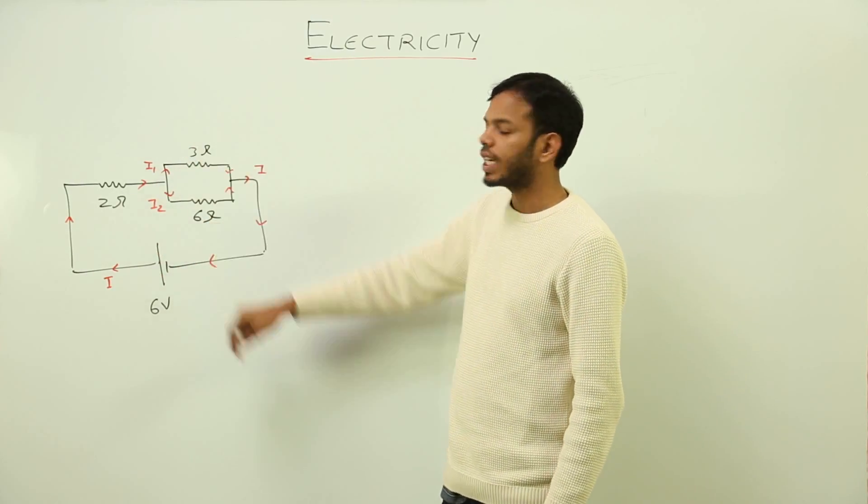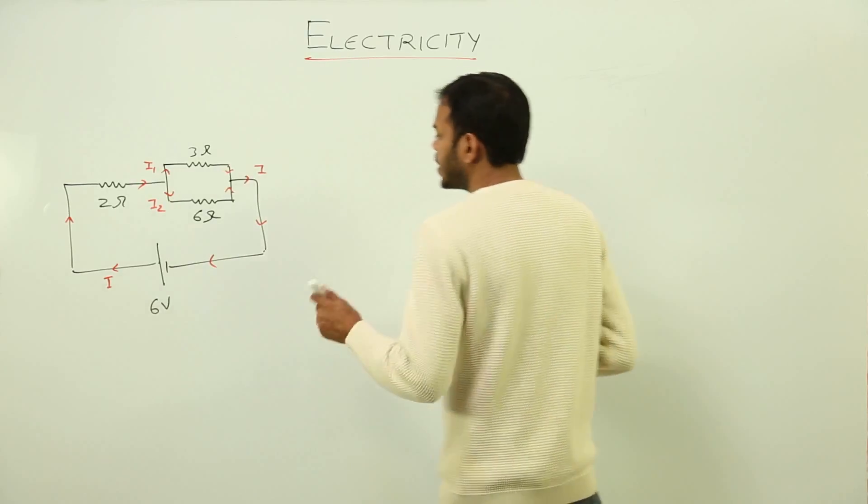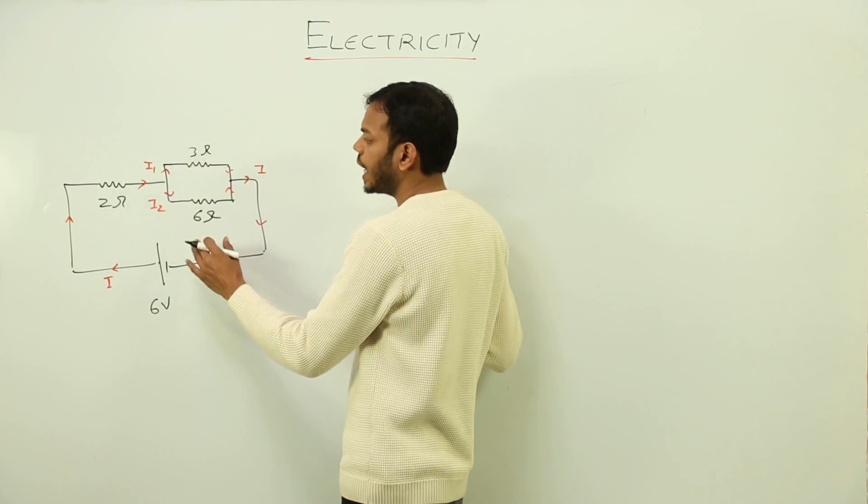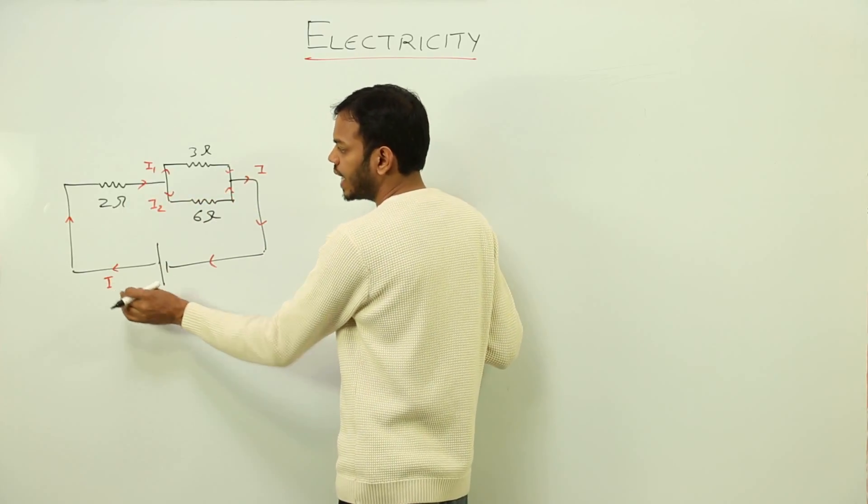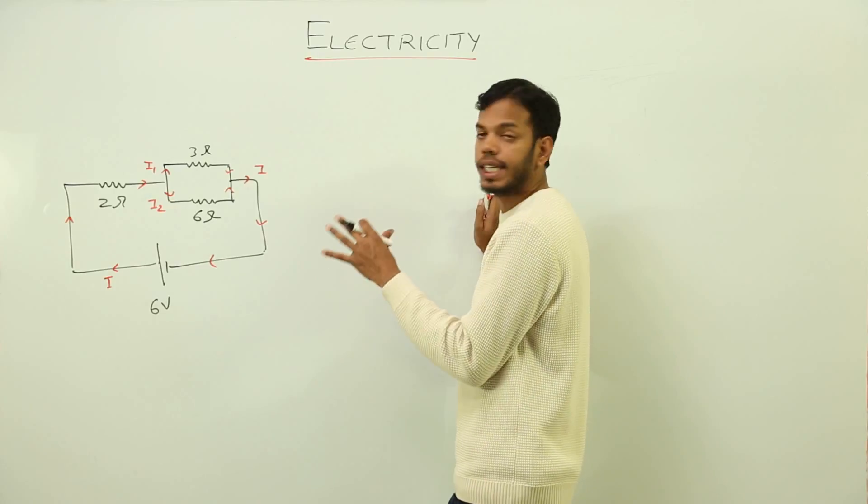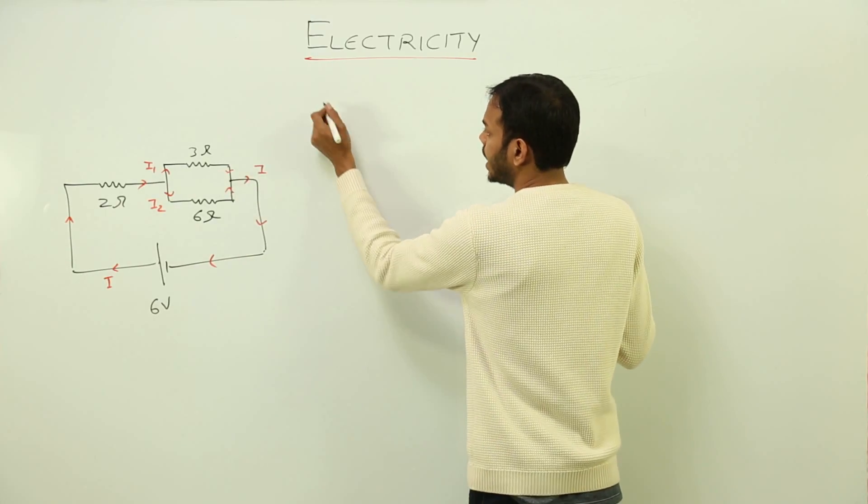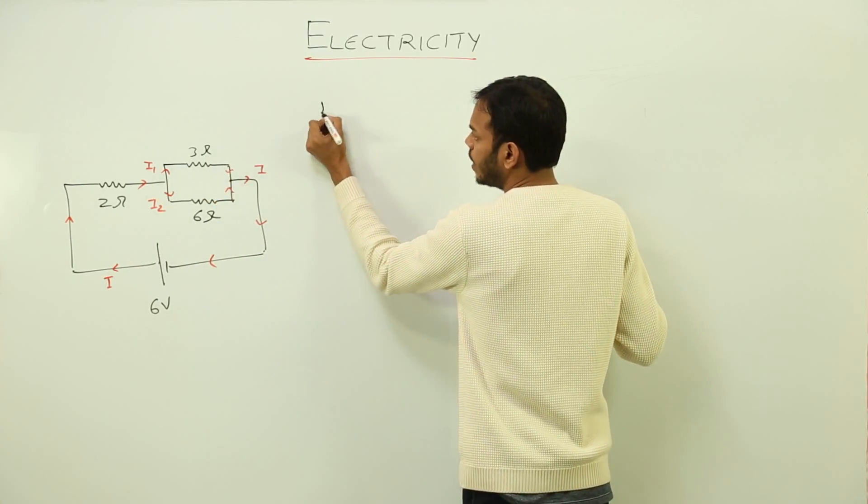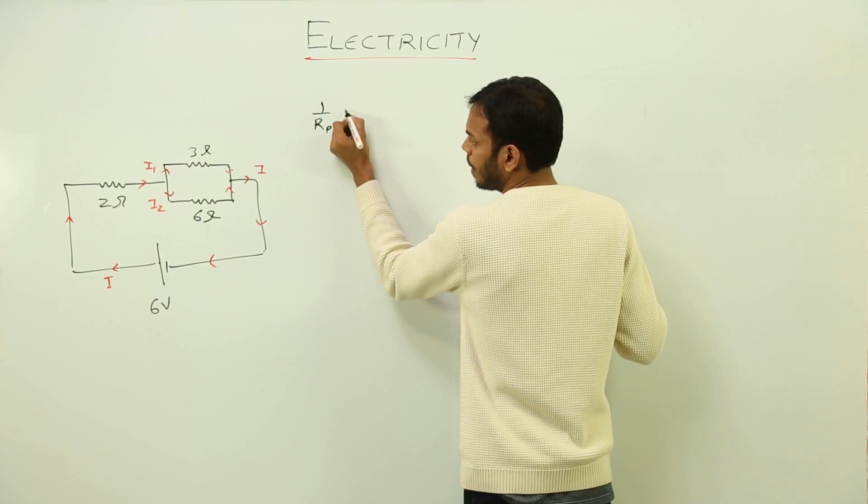Now let's solve. First of all, to find the value of I1 and I2, I'll have to know the value of current I, that is the main current. And to do that, I'll have to solve the whole resistance of the circuit. So let's start the combination. 1 upon Rp parallel is 1 upon 3 plus 1 upon 6.